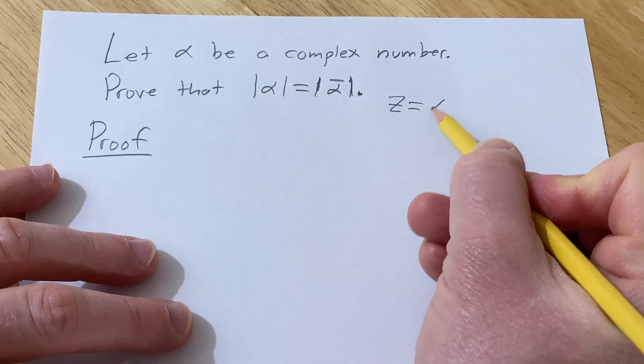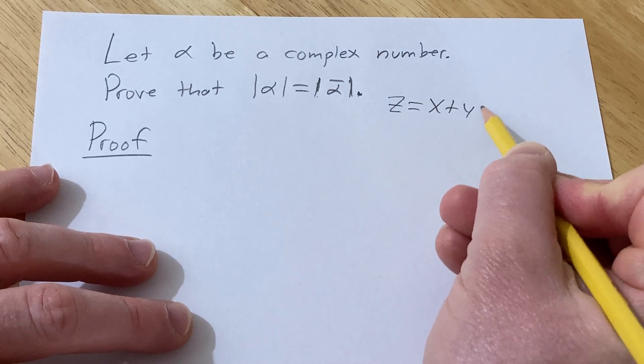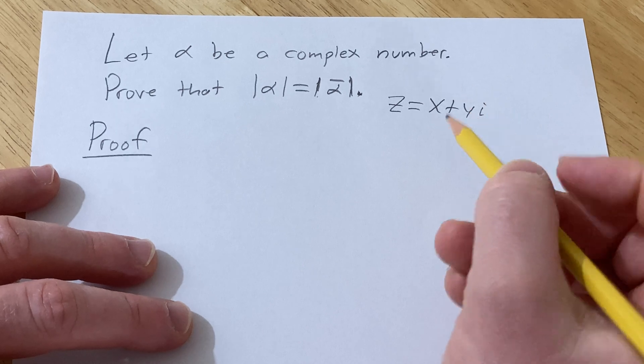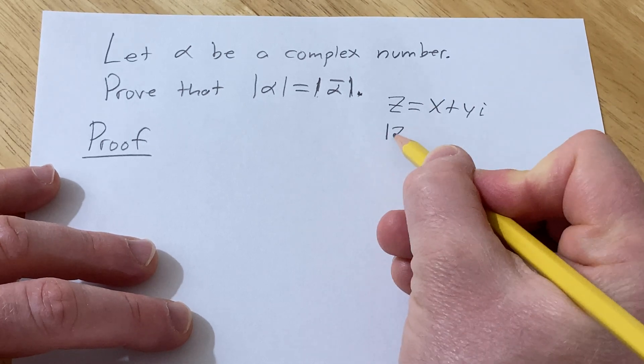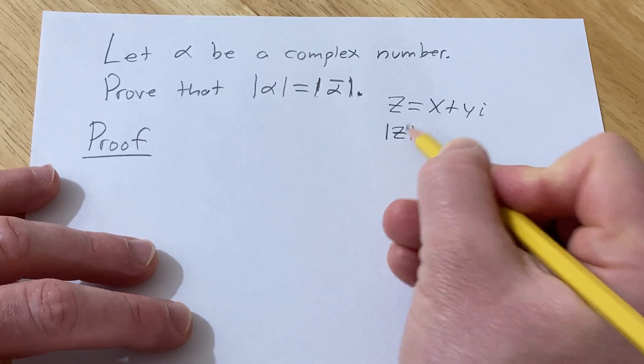If z is a complex number, that means we can write it as x plus yi, where x and y are real numbers. The modulus of z, or the absolute value of the complex number z, is equal to the square root of x squared plus y squared.